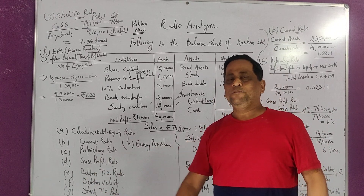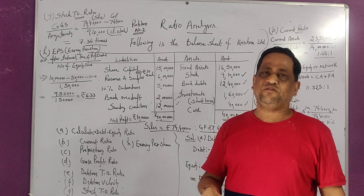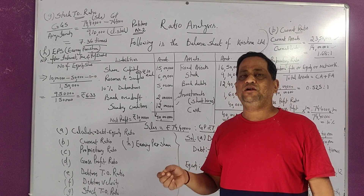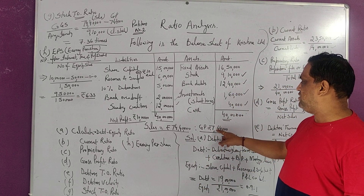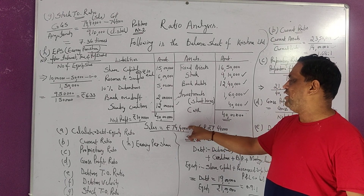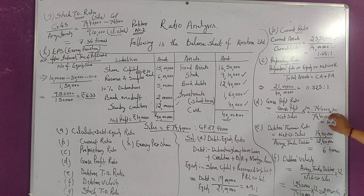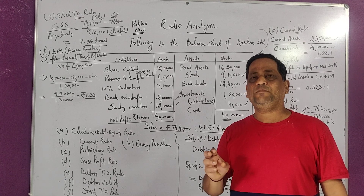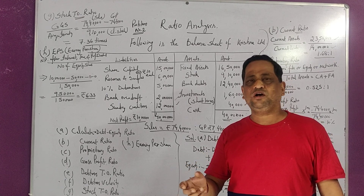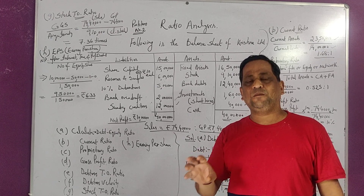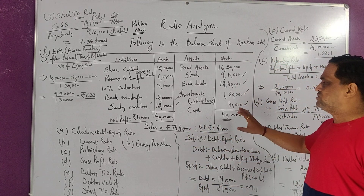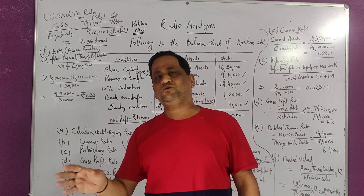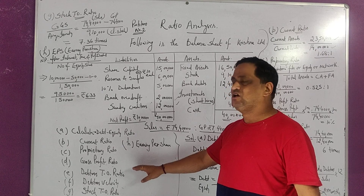Now gross profit ratio and net profit ratio are very simple. Gross profit ratio formula is gross profit divided by net sales multiplied by 100. Here we have gross profit of Rs. 7,44,000 and sales of Rs. 74,40,000. So gross profit divided by net sales multiplied by 100 gives us 10%. Higher the ratio, the better — if we make it 20%, higher the company. Similarly, net profit ratio is net profit divided by net sales multiplied by 100.